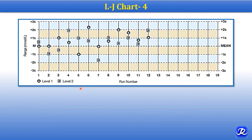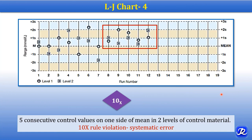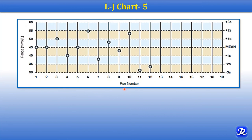In this LJ chart, two levels of control material are used and control measurement values are plotted. From the eighth run, all the control values are on one side of the mean, and there are 10 control measurements total. It is violating the 10X rule because there are 5 consecutive control values on one side of the mean in two levels of control material. This is a 10X rule violation showing systematic error.